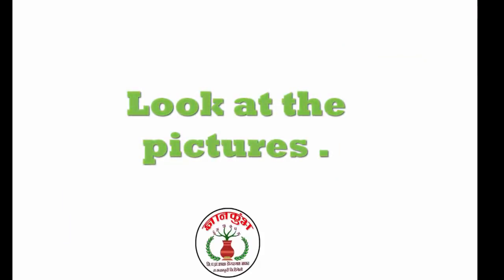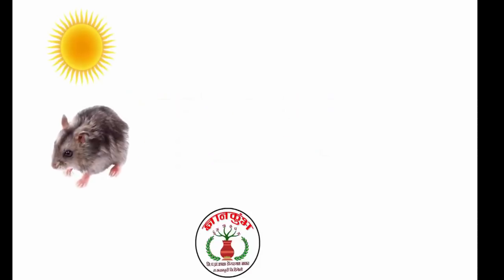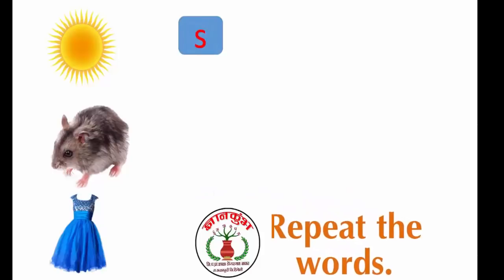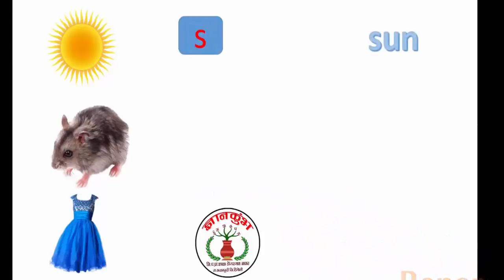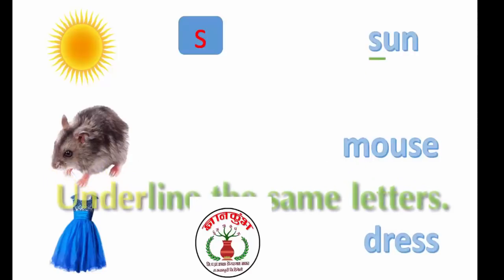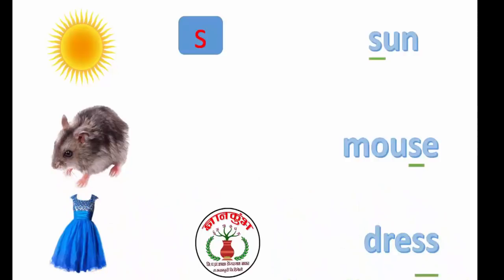Look at the pictures. Repeat the words: son, mouse, dress. Underline the same letters. S, S, S. R.